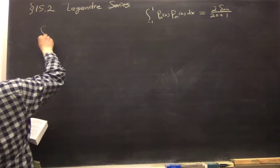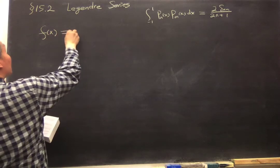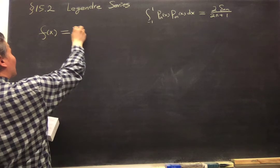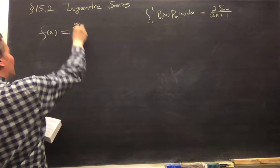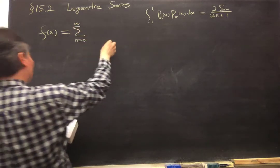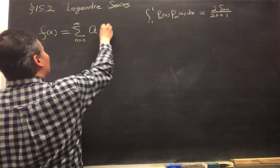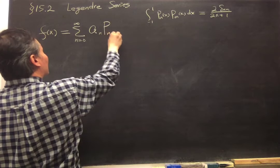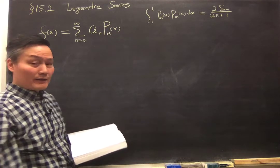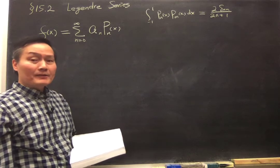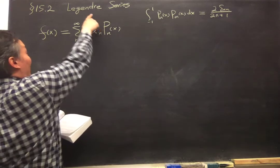So basically, if you have a function f, then we can express it as summing from n from 0 to infinity with some coefficient a_n times the Legendre polynomial of nth order. So that's the expression of the Legendre series.